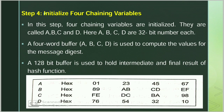Basically यहाँ पर इन 4 chaining variables ABCD की values hexadecimal में define की गई हैं। A की value को define किया गया है 01234567, B की value को 89ABCD। तो basically आप कोई भी value assume कर सकते हैं इन chaining variables की।